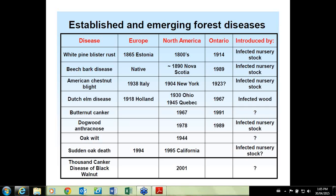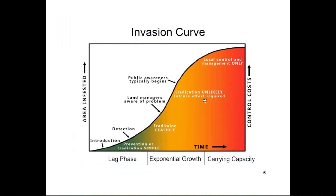Moving to the next slide — the invasive species curve. Along the bottom x-axis is time; on the left y-axis is area infested, and on the right is control costs. Along that curve, the labels read introduction, detection, land managers, and public awareness. This invasive curve is pretty common for most invasive species, and I'm sure many of you have seen it. I want to bring your attention to some of the invasive species we're dealing with in Ontario.